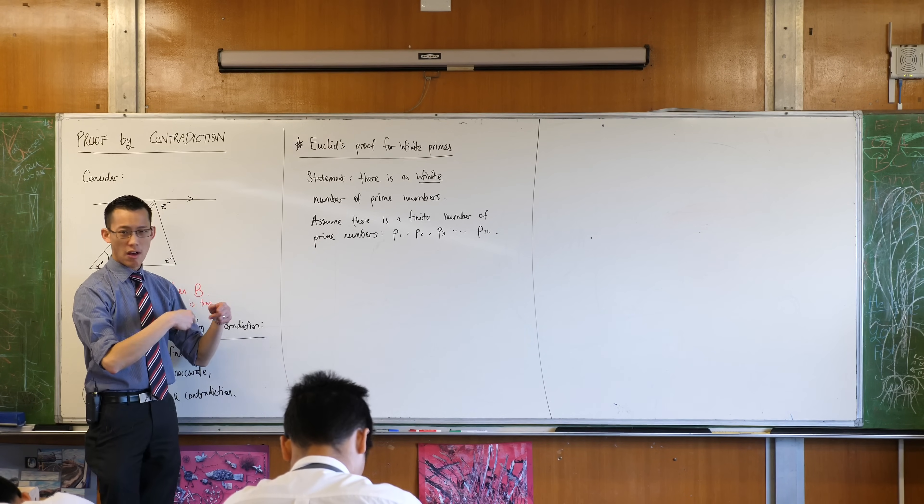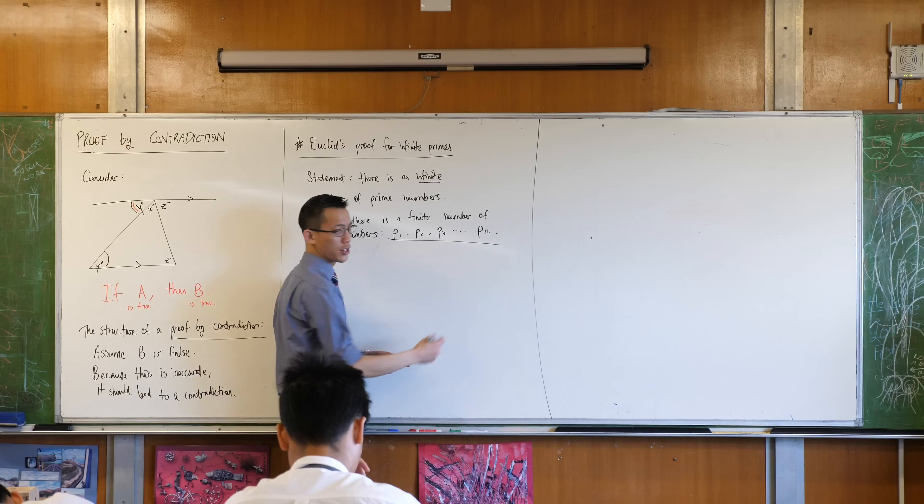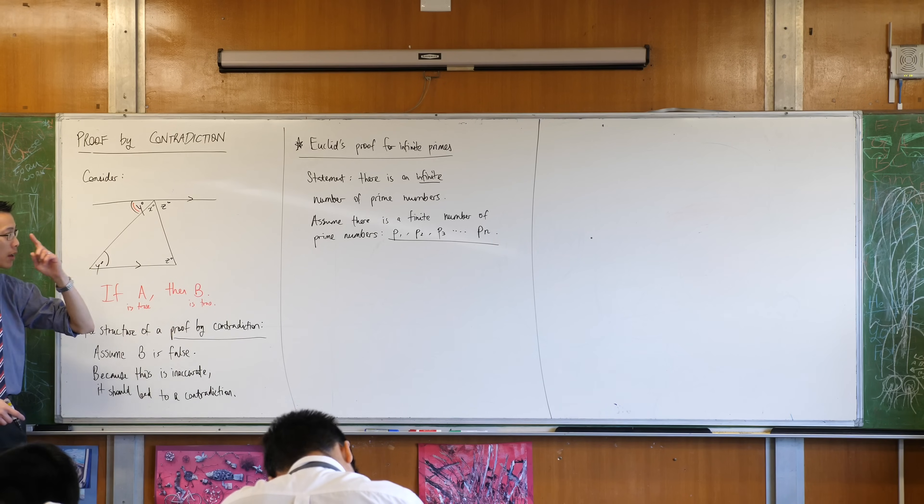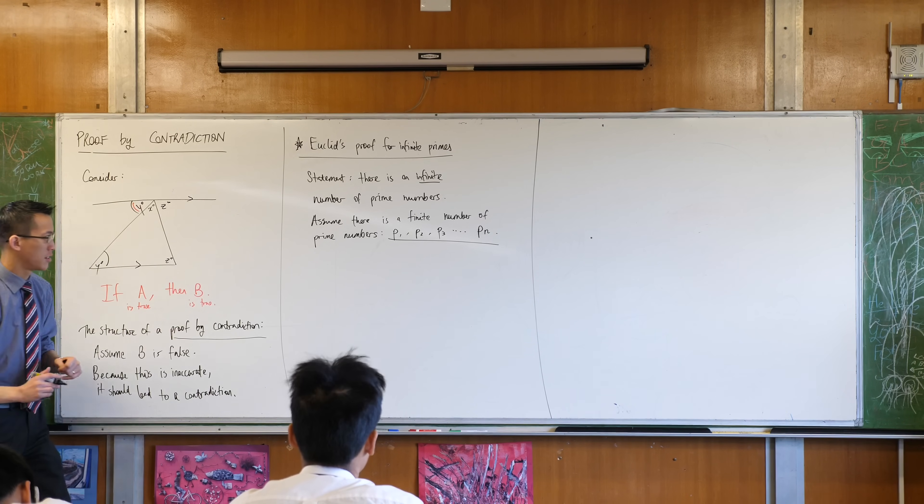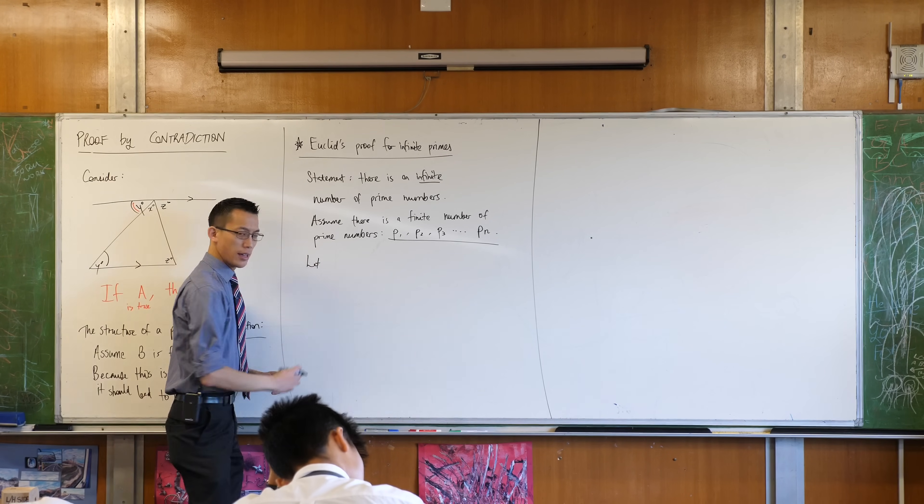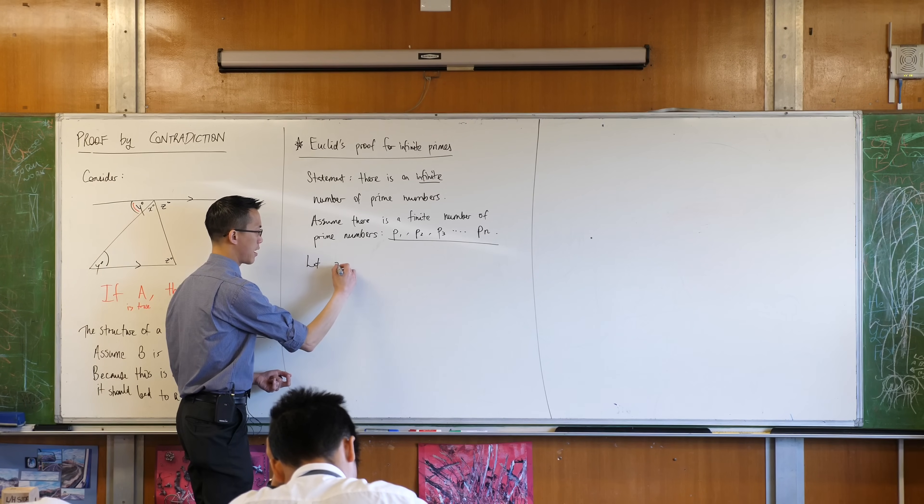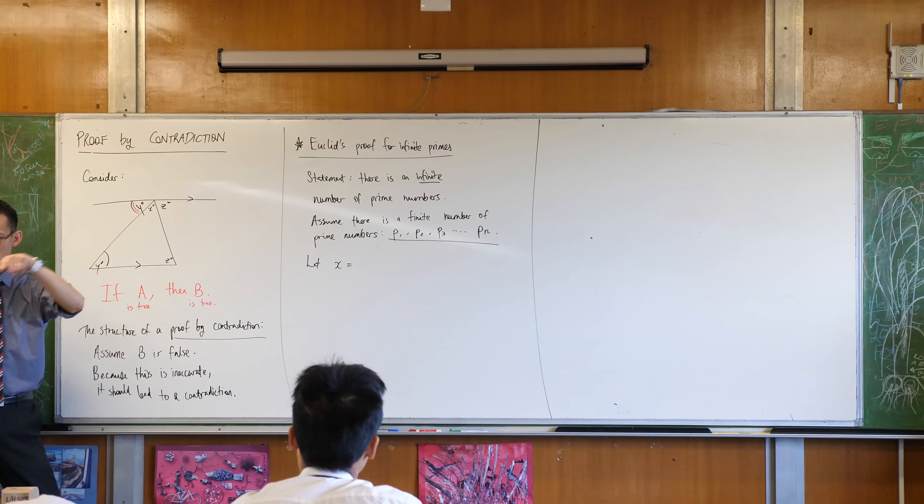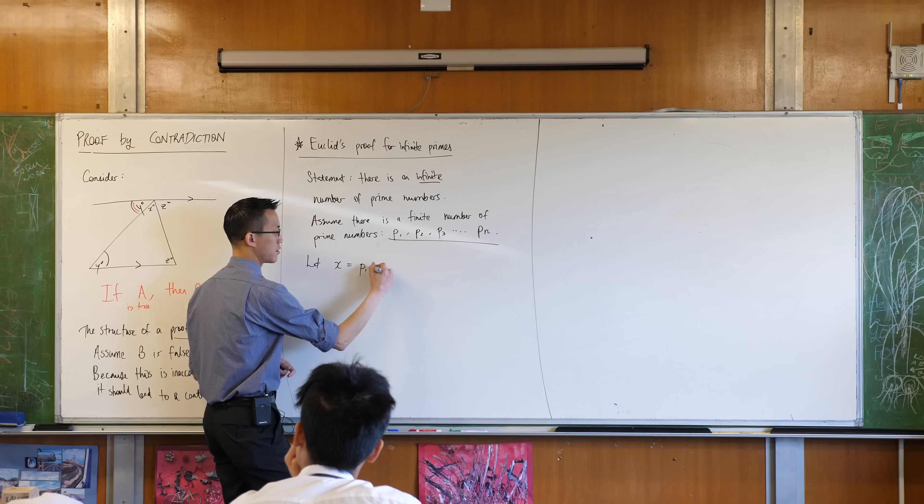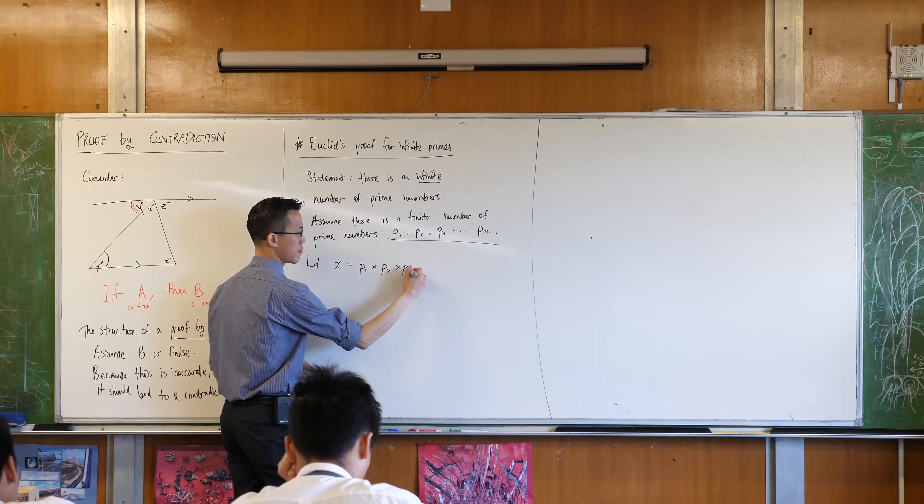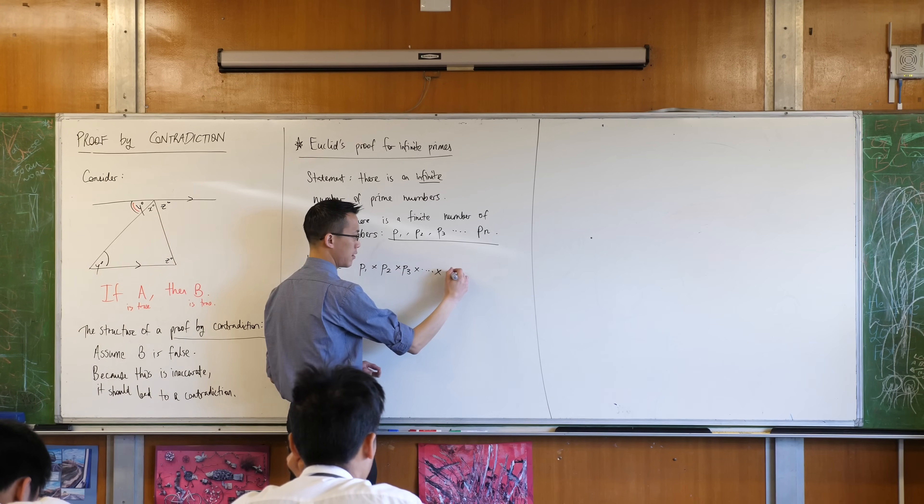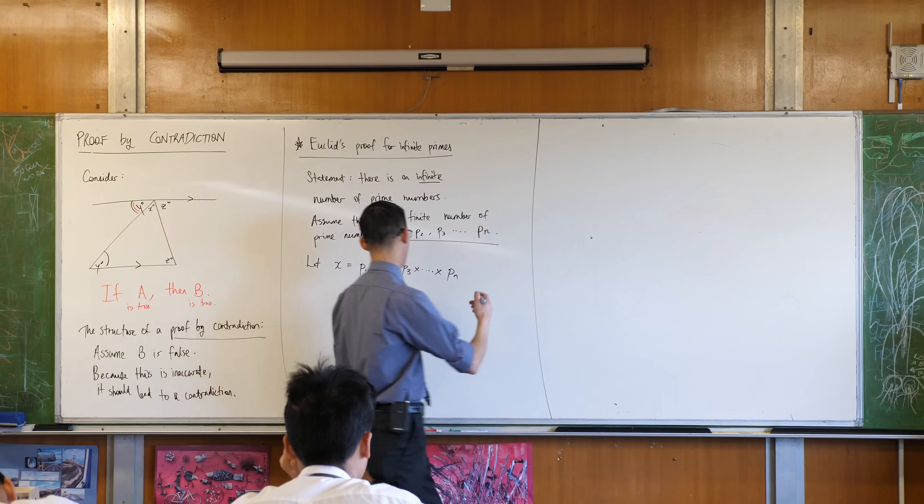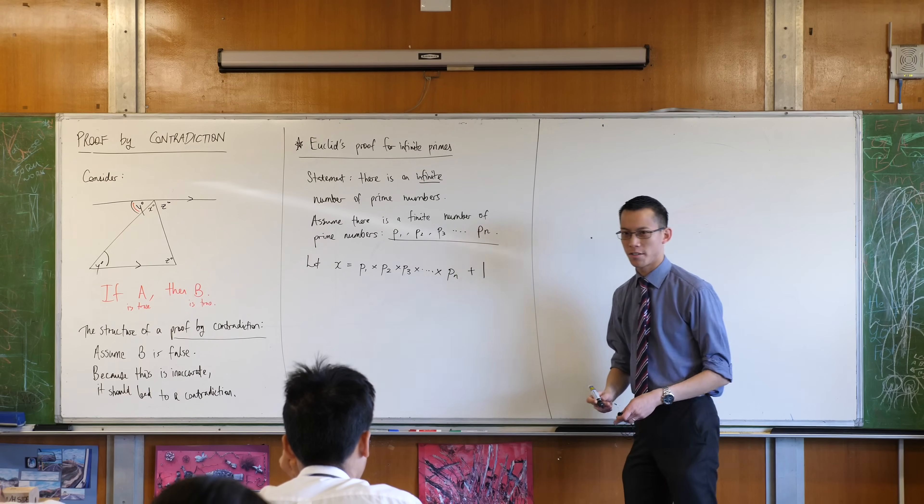So what I want to try and do is apply some logic that will take this assumption and show that something has gone wrong, show a contradiction with what I've assumed, okay? So here was Euclid's stroke of genius, right? What he said was, let, he introduced a new number, let's call it x. Let x be the product of all of these prime numbers, so p1 times p2 times p3, multiply all of them together, all the way up until the last one, and then do something really ingenious with that, which is add one, okay?